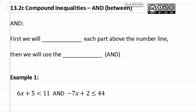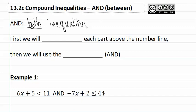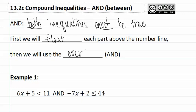Compound inequalities: AND. An AND inequality is when both inequalities must be true. We are going to draw each part above the number line, and then we will use whatever overlaps, because the overlap is the AND — it's the portion where both of them are true.